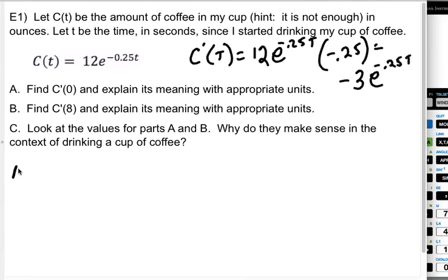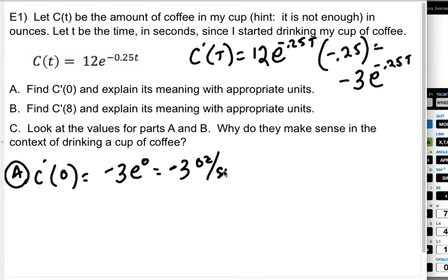So what's going to happen is I'm going to get that this is a -3, because this is 12 times a negative one fourth, e^(-0.25t). That's my derivative C'(t). So in part A, C'(0) should be -3e^0, or just -3.